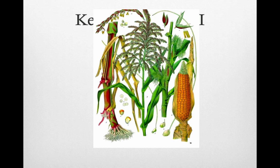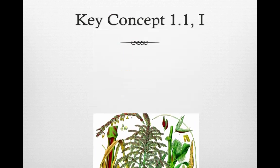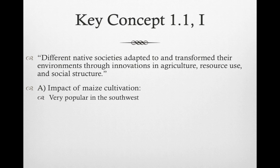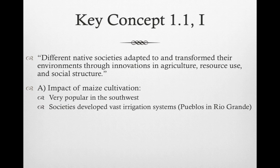Key Concept 1.1, Roman numeral one, can be described in one word: maize, or corn. Different native societies adapted to and transformed their environments through innovations in agriculture, resource use, and social structures. Maize cultivation was very popular in the southwest, in present-day New Mexico and Arizona areas, where societies developed vast irrigation systems to bring water to the maize — especially in the pueblos near the Rio Grande River.